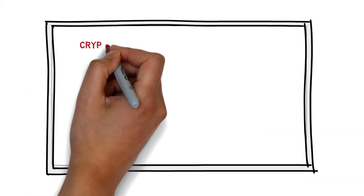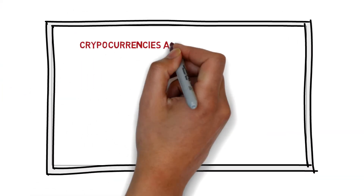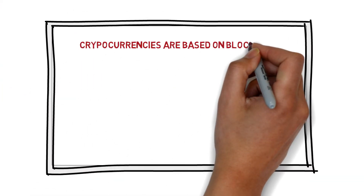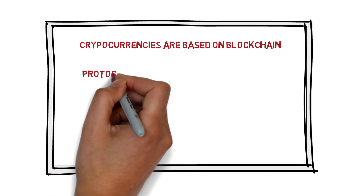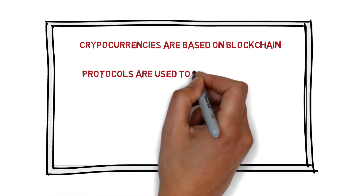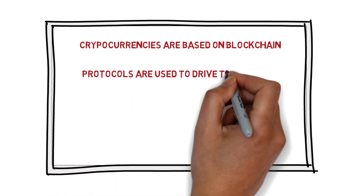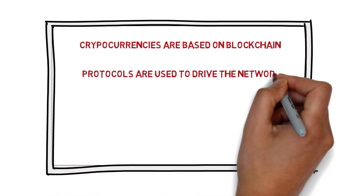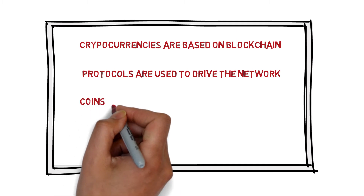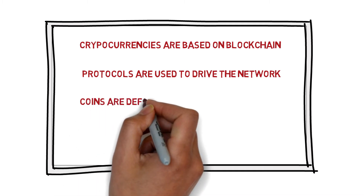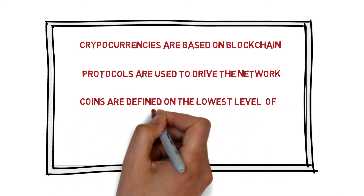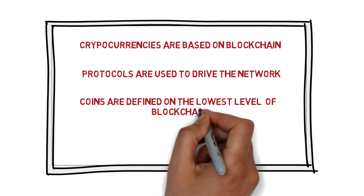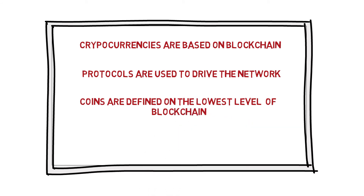So basically, blockchain technology is used in which cryptocurrencies are based. And these protocols are used for the network, and these protocols are used for coins. Coins, in essence, are defined at blockchain's lowest level — these are native digital assets in the network.